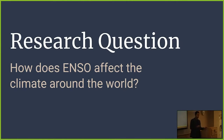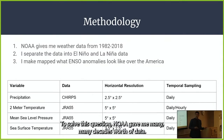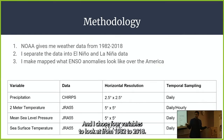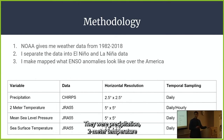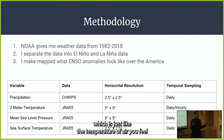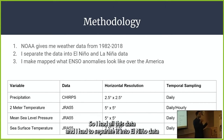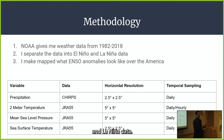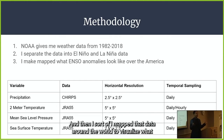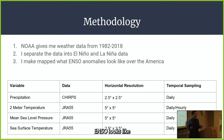To solve this question, NOAA gave me many decades worth of data. I chose four variables to look at from 1982 to 2018: precipitation, two-meter temperature (which is just the temperature of the air you feel), mean sea level pressure, and sea surface temperature. I then separated the data into El Niño data and La Niña data, and mapped it around the world to visualize what ENSO looks like.